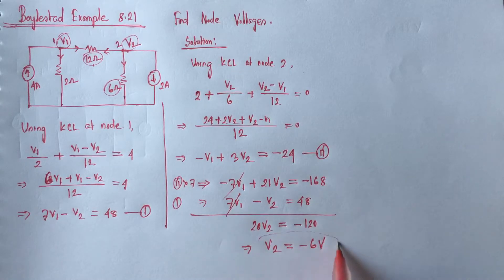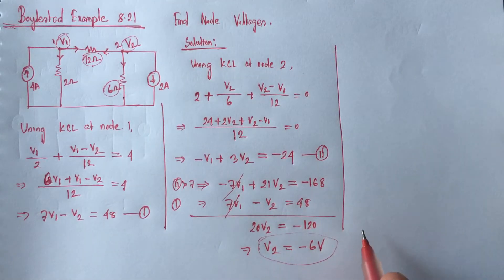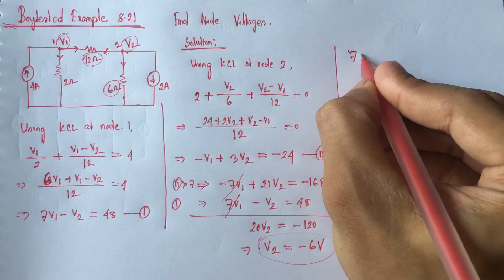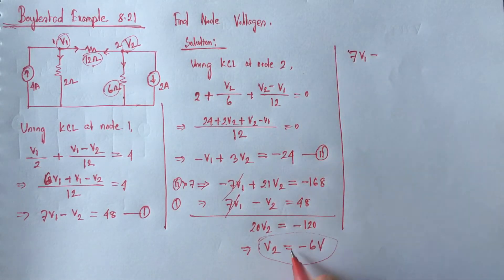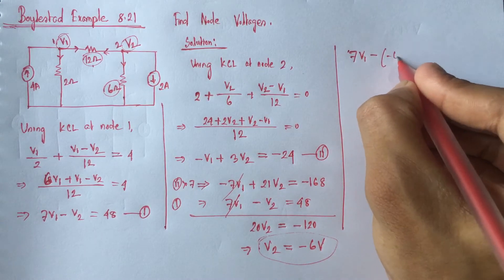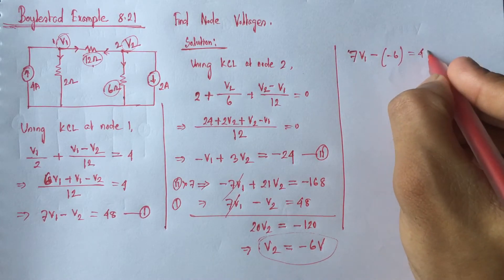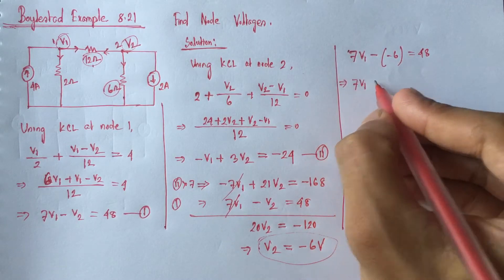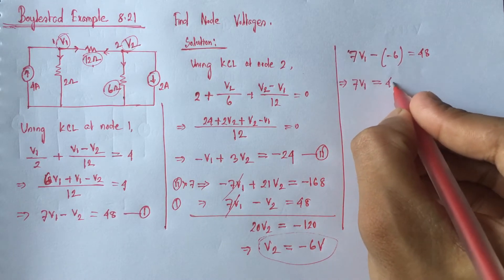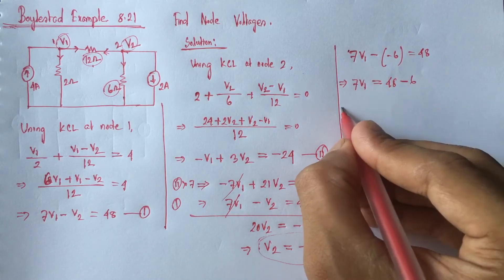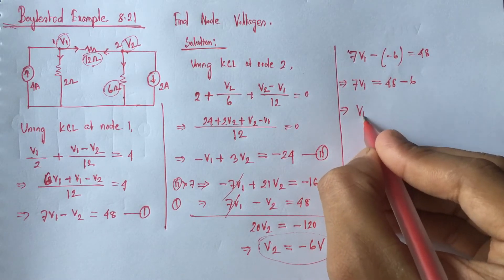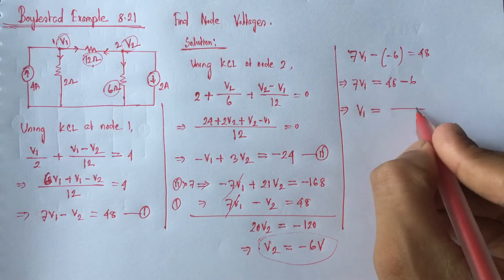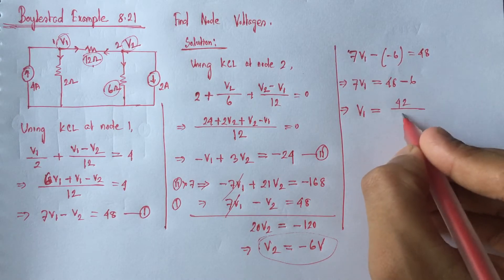Now, if we put value of V2 in equation 1, we will get 7V1 minus V2, which is minus 6 volt, equals 48. That is 7V1 equals 48 minus 6, that is V1 equals 42 by 7.